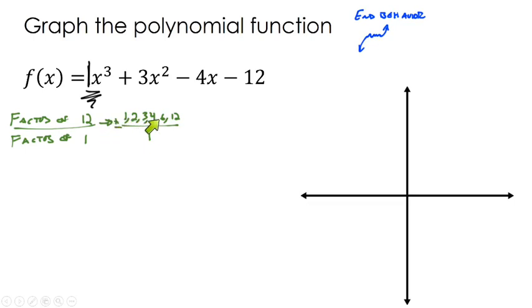Factors of 12 are 1, 2, 3, 4, 6, and 12 all over 1. We have six options: positive or negative 1, 2, 3, 4, 6, and 12. Our function will cross the x-axis at most three times. If the roots are real roots, they will be one of these numbers. Wherever it does cross the x-axis will be one of these.